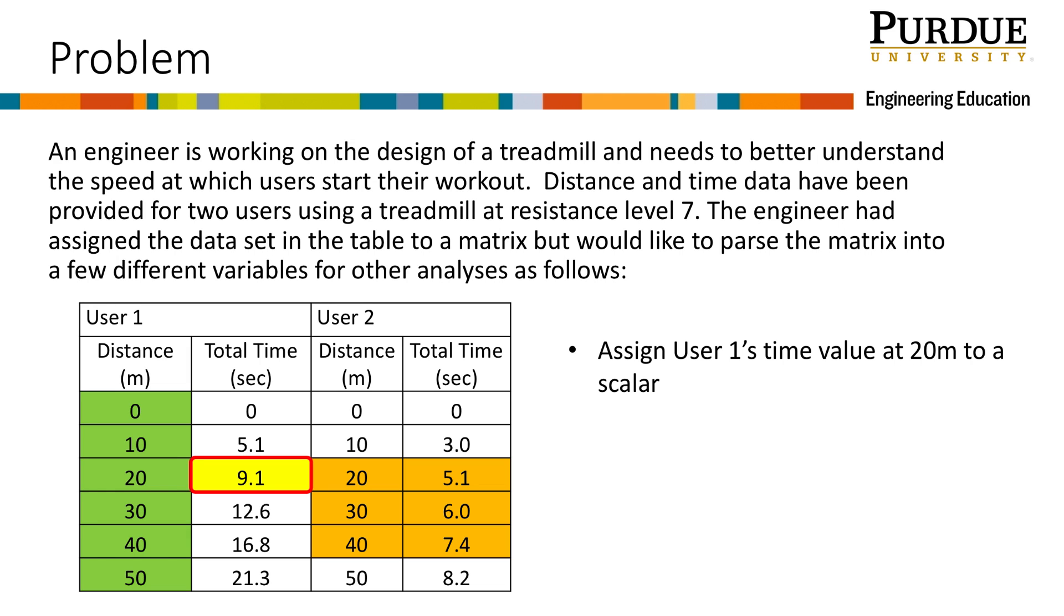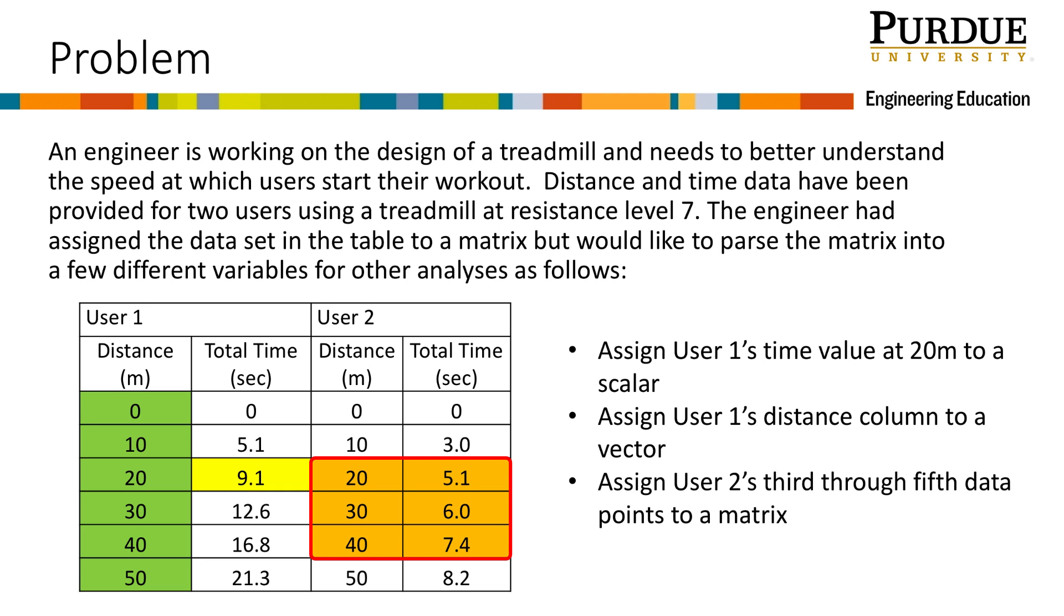Assign user 1's time value at 20 meters to a scalar. Assign user 1's distance column to a vector. Assign user 2's 3rd through 5th data points to a matrix. We will use array indexing to copy the highlighted values in the matrix to separate variables.